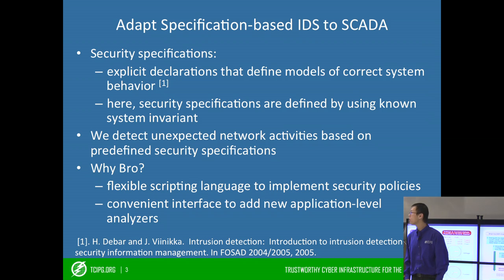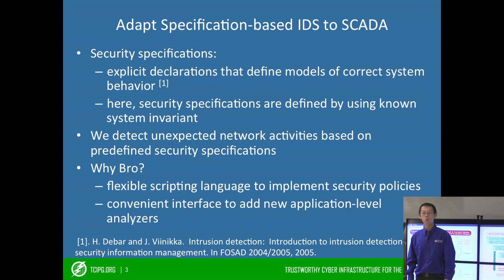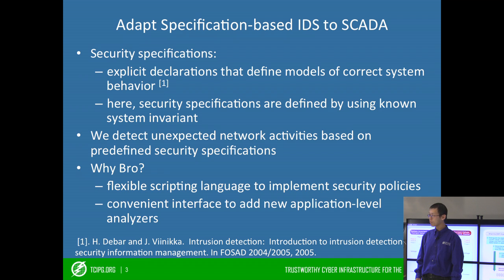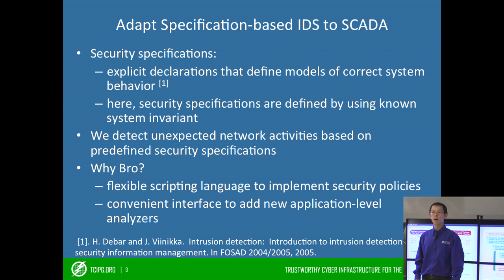What is the security specification? Based on my knowledge, this is an explicit declaration that defines the model of correct system behavior. Here, the security specifications are defined by using known system invariants. Then we detect the unexpected network activities based on the predefined security specifications. We implement our IDS in Bro because Bro provides a flexible scripting language to implement different security policies, and also provides a convenient interface to add new application layer analyzers.